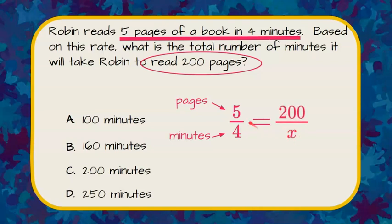We can determine that 5 times 40 is 200. So 4 times 40 will give us our number of minutes to read 200 pages.